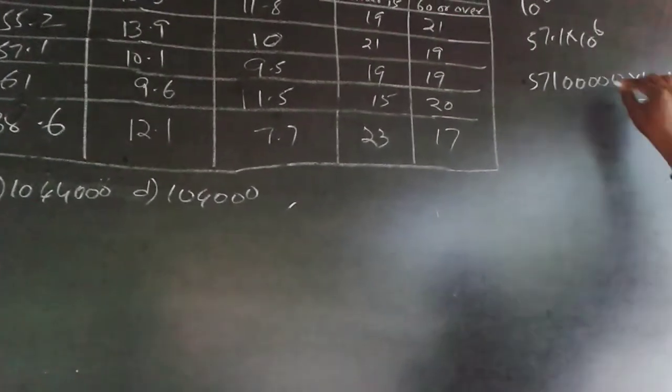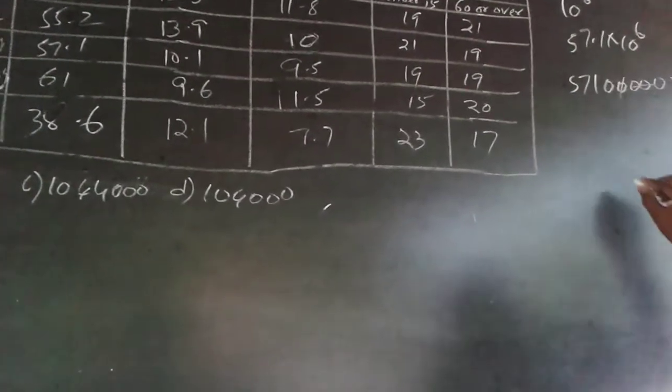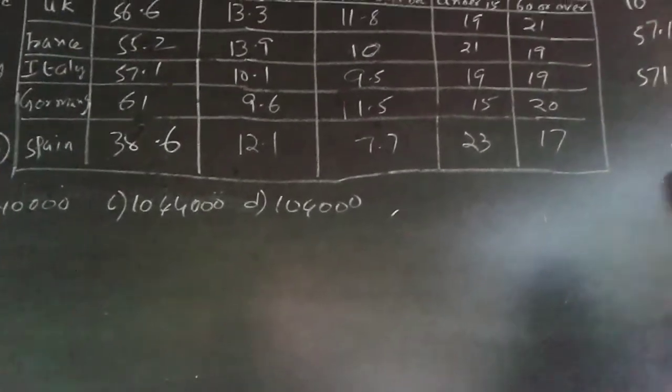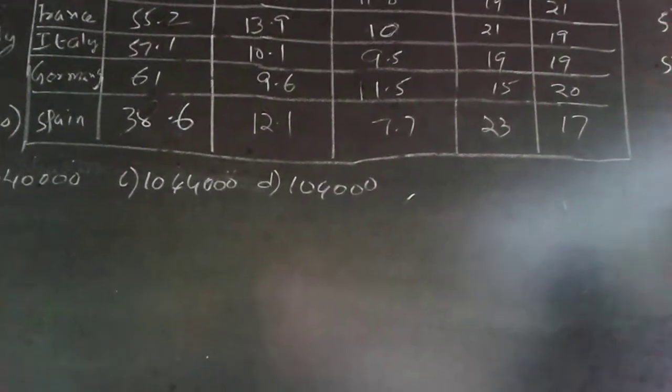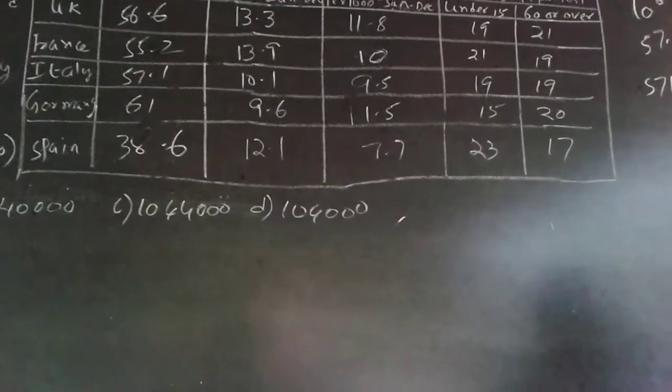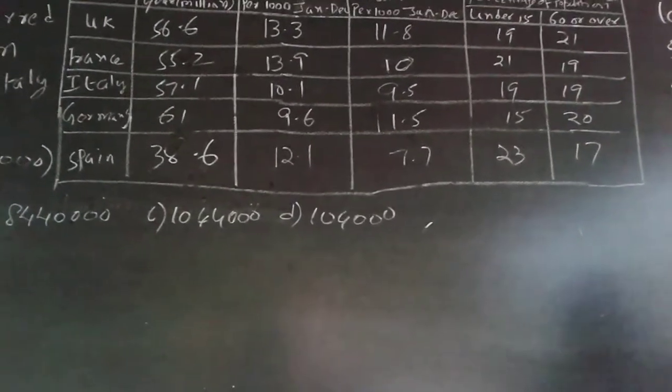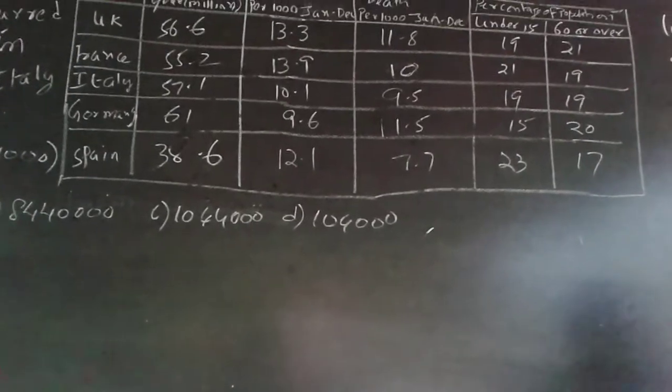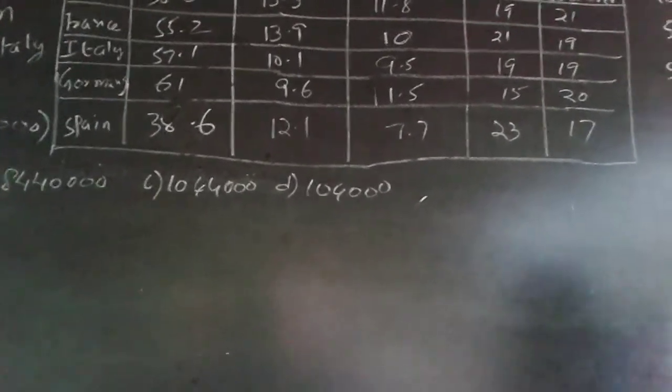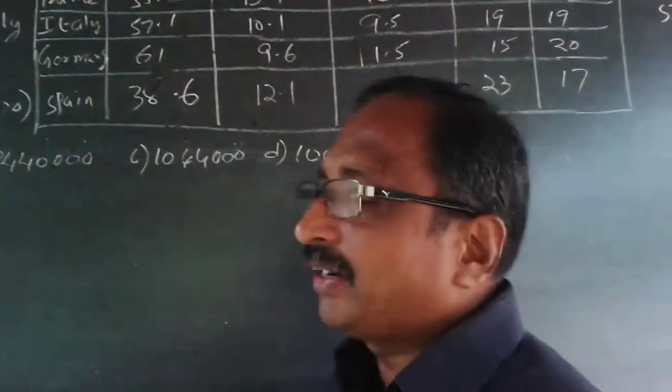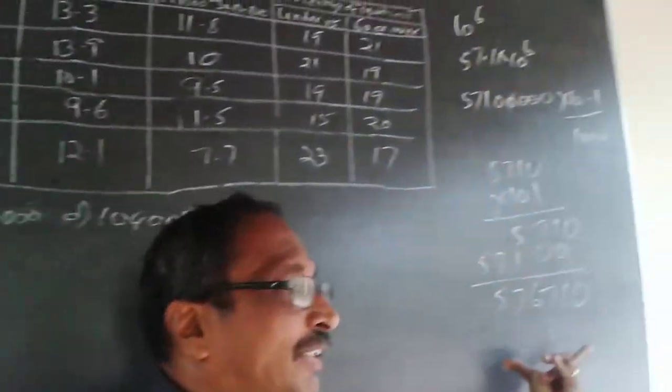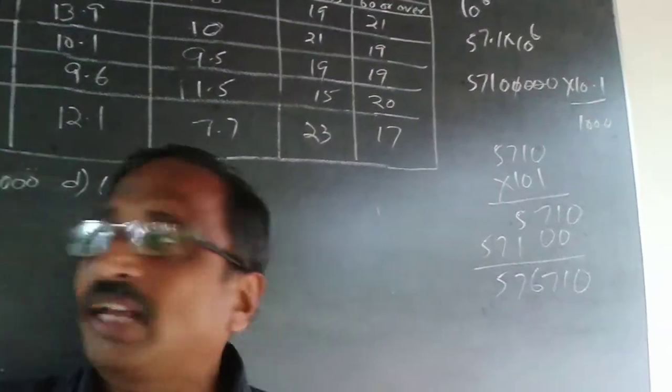So this will be 57,100 and again 5710, so the total will be 576,710. Italy live births for the year January to December as per this data is 576,710. But they asked for Italy and Spain put together, so similarly I'll have to work it out for Spain.